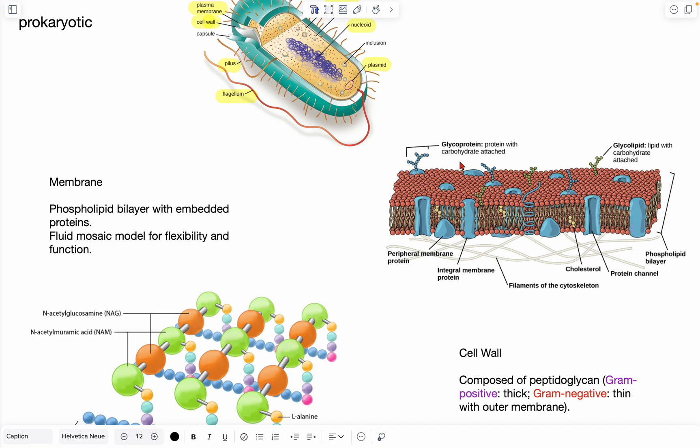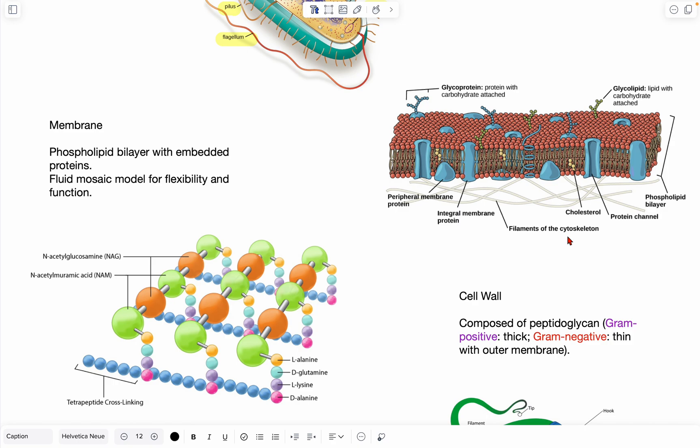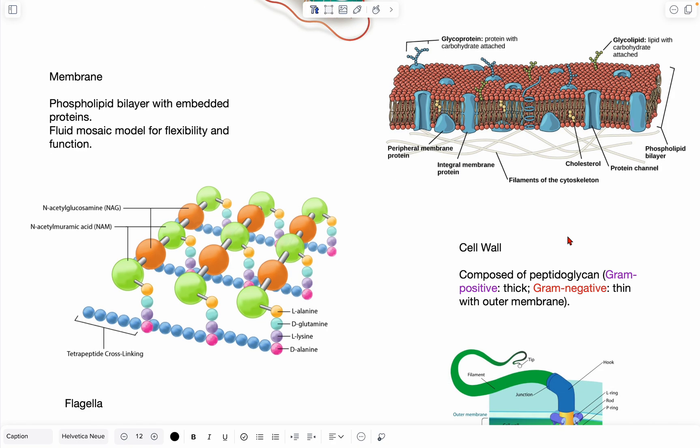There's also glycoproteins and glycolipids, which sit on the outer layers of the bilayer, and there's also cholesterol, which allows for fluidity and depends on temperature and whatnot. Also, we can see the filaments of the cytoskeleton here.